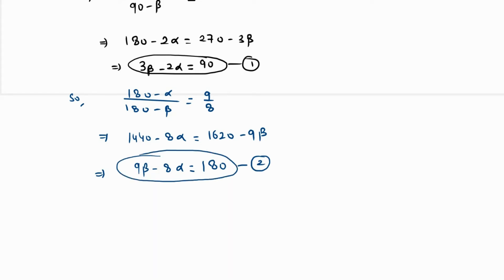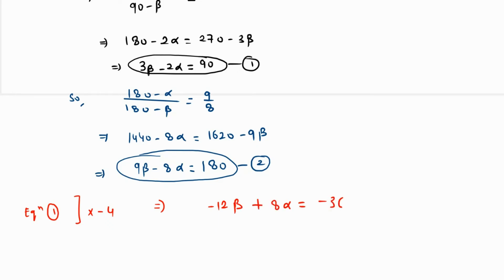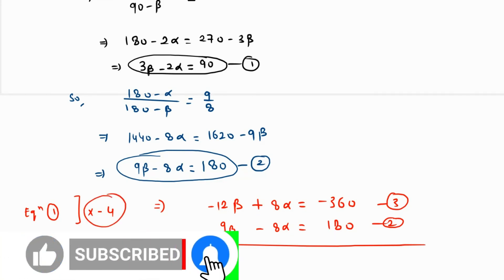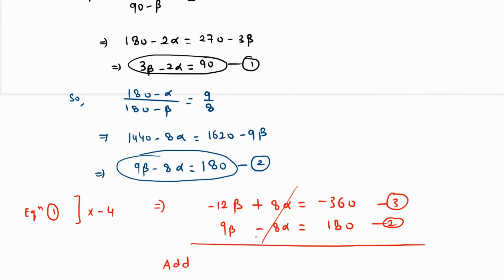To solve equations 1 and 2, we use the elimination method. Multiplying equation 1 by minus 4 gives: minus 12 beta plus 8 alpha equals minus 360 — call it equation 3. Equation 2 remains: 9 beta minus 8 alpha equals 180. Adding equations 2 and 3, the 8 alpha and minus 8 alpha cancel out, leaving minus 12 beta plus 9 beta, which is minus 3 beta.